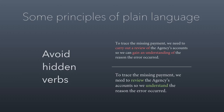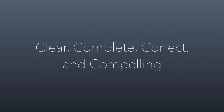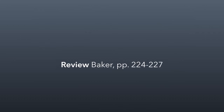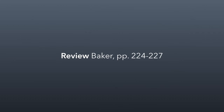So those are some principles of plain language, and we're going to apply these rules together in class. When you write, it's important that you write according to the four C's, which are described in the Baker text. Clear writing is writing with words that can be understood. Complete writing is using words that are appropriately precise. Correct writing is using words that are accurate in their meaning and spelling. Compelling writing is using words that have the desired impact. The Baker book has some excellent examples on pages 224 through 227. I'm not going to revisit those here, so I encourage you to go take a look at those pages.